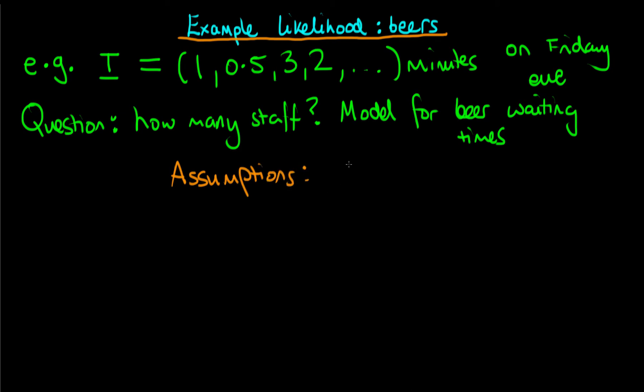To begin with, we might assume that the orders of beer occur independently. So the probability of one individual ordering a beer over the next time interval does not depend on whether someone else orders a beer over that interval. Of course, if individuals tend to congregate in groups as they do in pubs, then they might tend to go to the bar together and hence beers would then not be ordered independently.